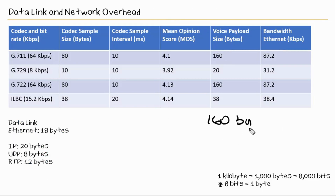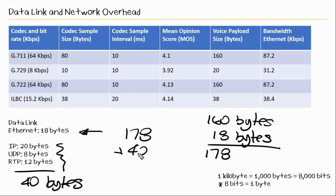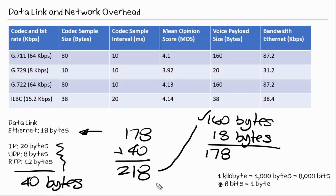So let's carry over our 160 bytes of data. Then since we are using Ethernet as a data link layer, we add 18 bytes there, giving us 178. The network and transport layer will always equal 40 bytes, so 178 and 40 gives us 218. We've taken our voice payload and added the overhead of the data link and the network layer, and now we're at 218.